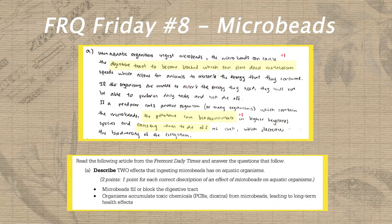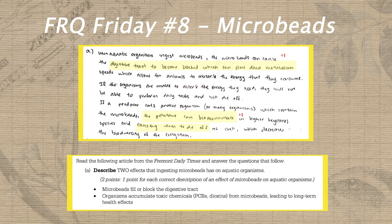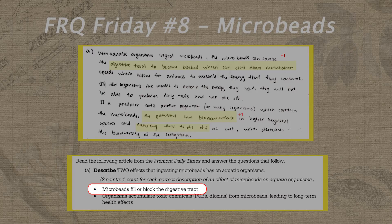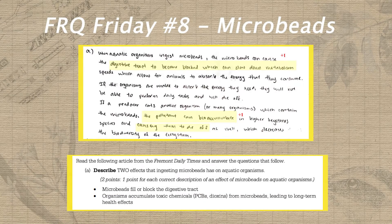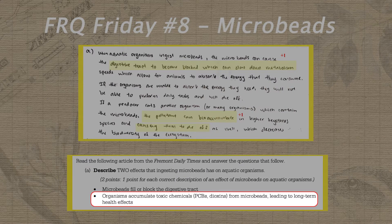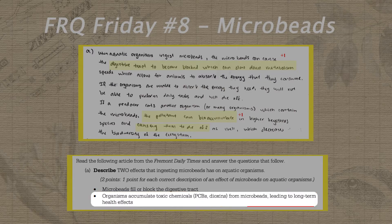In part A, Wilson gets off to a great start, picking up both possible points. First, he describes that microbes can cause the digestive tract to become blocked, which can slow down metabolism. And second, he describes how these pollutants can bioaccumulate in organisms such as keystone species.